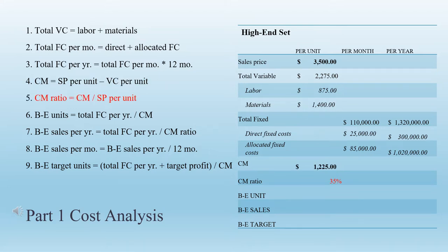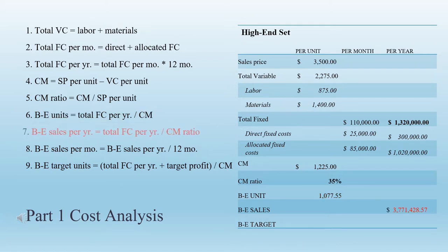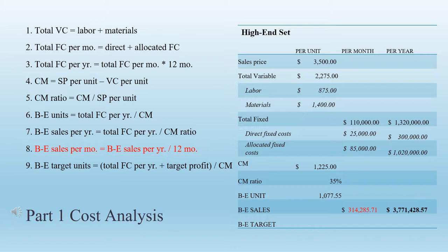Step 5: calculate the contribution margin ratio by dividing the contribution margin by the selling price per unit for 35%. Step 6: calculate the break-even sales in units by dividing the total fixed cost per year by the contribution margin for 1,077.55 units. Step 7: calculate the break-even in sales per year by dividing the total fixed cost per year by the contribution margin ratio for $3,771,428.57 per year. Step 8: calculate break-even in sales per month for $314,285.71 per month. Step 9: calculate the break-even target units by adding the total fixed cost per year plus the target profit, then dividing by the contribution margin for 1,485.71 units.